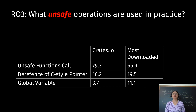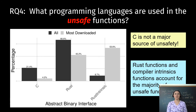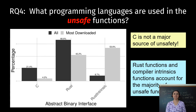We found that the vast majority of unsafe operations are unsafe function calls. To further gain insight into what programming languages the unsafe functions are implemented in, we checked the abstract binary interface of the implementations. We observed that the majority of the calls are to Rust functions. Re-implementing C libraries in Rust will not help eliminate most of the unsafe.